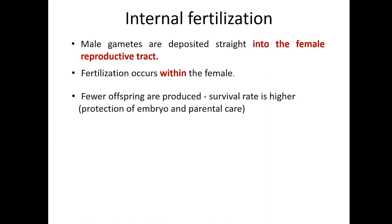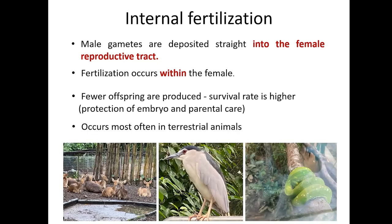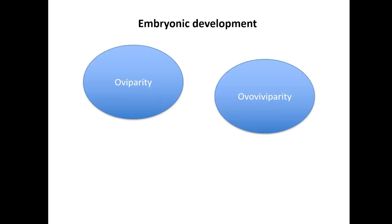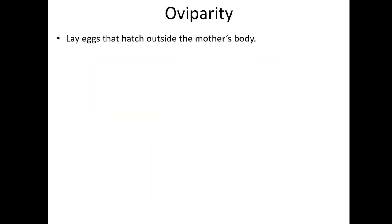Even though fewer offspring are produced through internal fertilization, their survival rate is higher due to the protection of the embryo and parental care. This method occurs in most mammals, birds, and a few reptiles. There are three types of embryo development: oviparity, ovoviviparity, and viviparity.